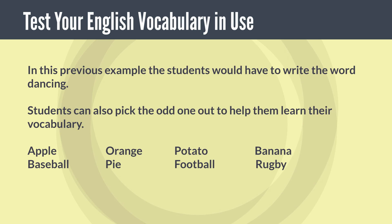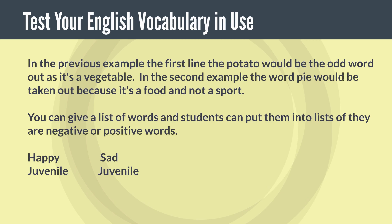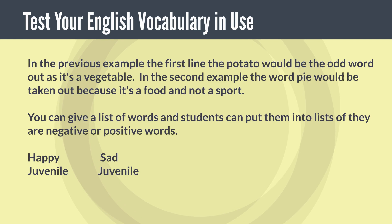Students can also pick the odd one out to help learn vocabulary. For example: apple, orange, potato, banana — the potato would be the odd word out as it's a vegetable. Or baseball, pie, football, rugby — the word pie would be taken out because it's a food and not a sport. You can also give a list of words and students can sort them into negative or positive categories, such as happy and sad.